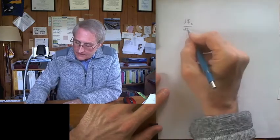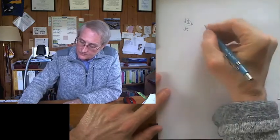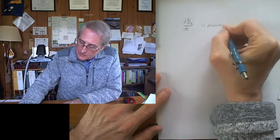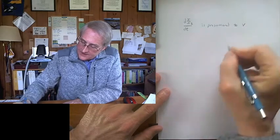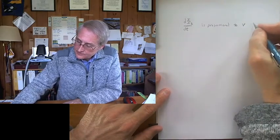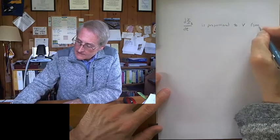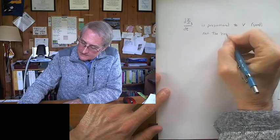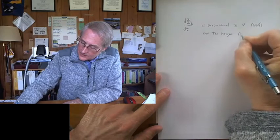That's a t, is proportional to v, the speed, not the height, which I'll call h.